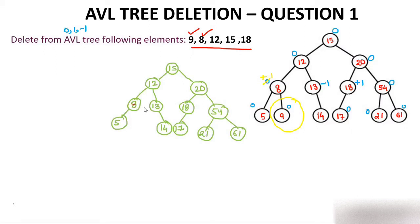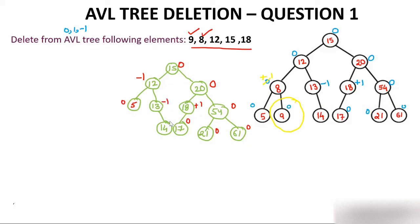After deleting 8 and placing 5 in its position, recalculate balance factors. The balance factor of 15 remains 0. On the left side, node 12 becomes minus 1, node 5 becomes minus 1, and some nodes remain 0. The right side has no changes. All balance factors are still within {0, 1, -1}, so after deletion of 8 this tree is still a balanced AVL tree.